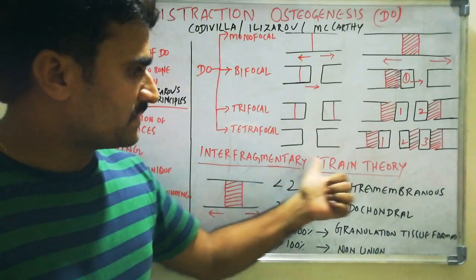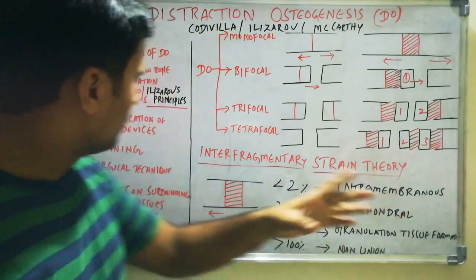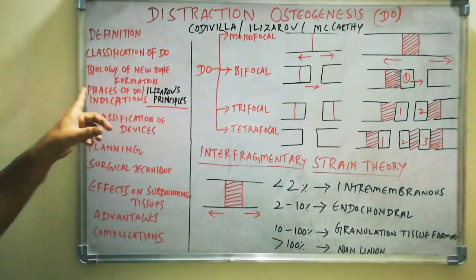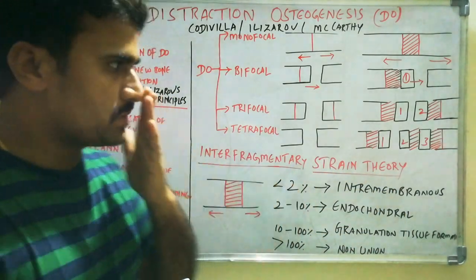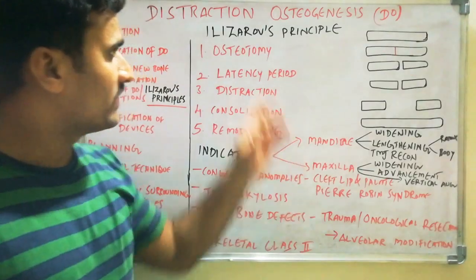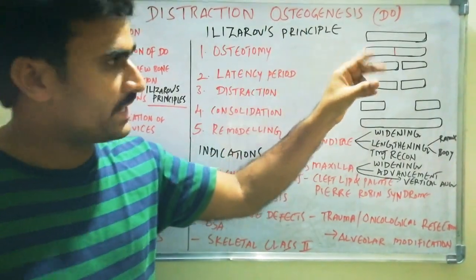This is how bone formation occurs in the distracted area — the interfragmentary strain theory. We will now discuss the phases of DO, Ilizarov's principles. There are five Ilizarov's principles.